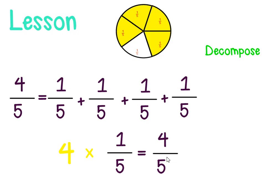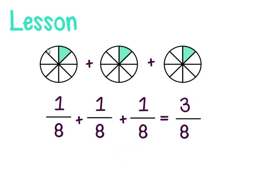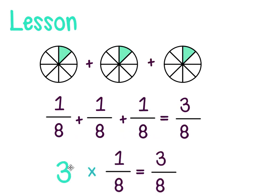Let's look at another example. We have a model showing one eighth plus one eighth plus one eighth. Added together, that gives us three eighths. This is another example where we can use repeated addition or multiplication: three groups of one eighth equals three eighths. So three eighths is the third multiple of one eighth.